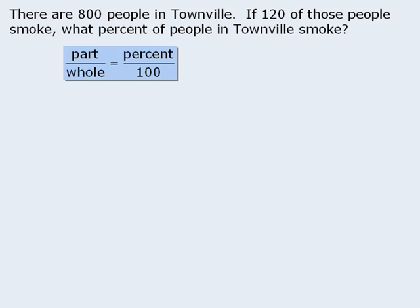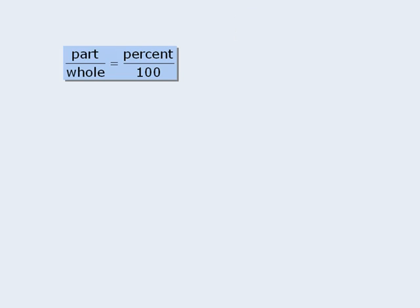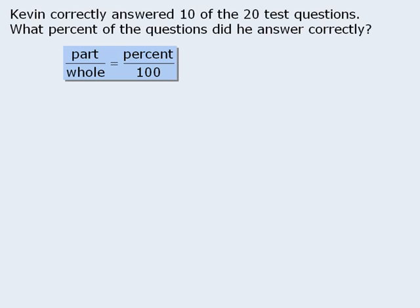To show how and why this works, let's consider a different question, where Kevin correctly answered 10 out of 20 questions, and we want to determine what percent of the questions he answered correctly. So out of the whole test, consisting of 20 questions, Kevin answered a portion correctly, so the part here is equal to 10.